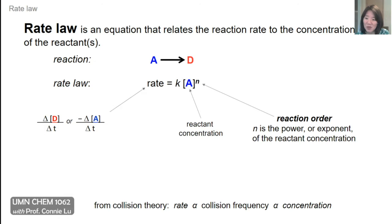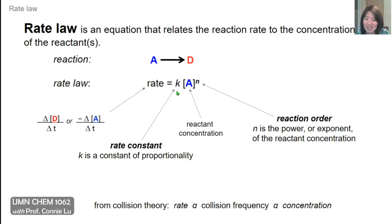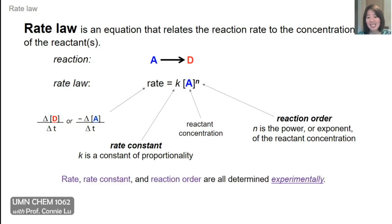There are other important terms in this rate law. This power is called the reaction order — it's the exponent that the reactant concentration is raised to. This constant K is called the rate constant, and it is a constant of proportionality between rate and A raised to the power of N. Importantly, the rate, the rate constant, and the reaction order all have to be determined experimentally. You can't determine N or K just by looking at the chemical equation; you have to measure them through experiment, using measured rates to solve for K and N.